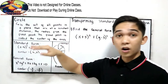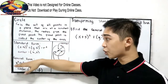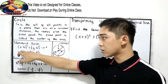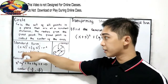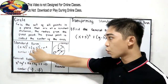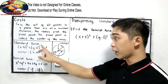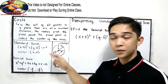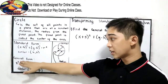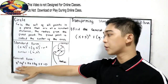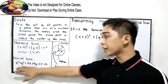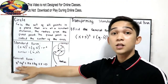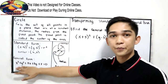Let us recall: the standard form is the quantity x minus h squared plus the quantity y minus k squared is equal to r squared. And the general form is x squared plus y squared plus Dx plus Ey plus F is equal to zero.